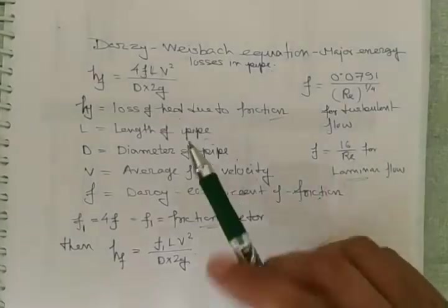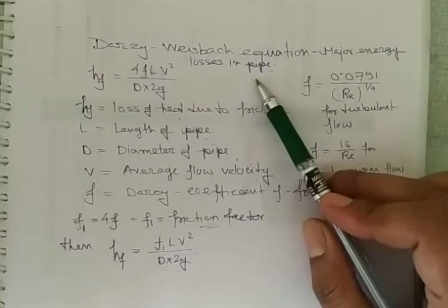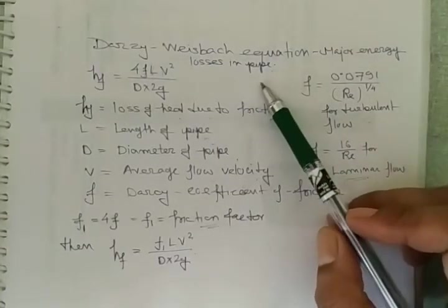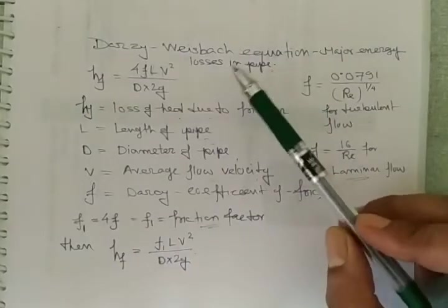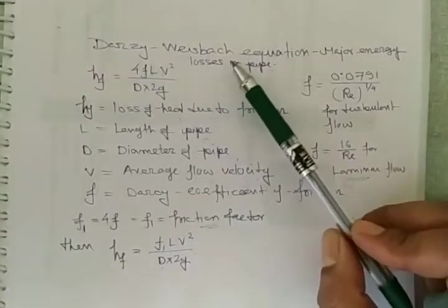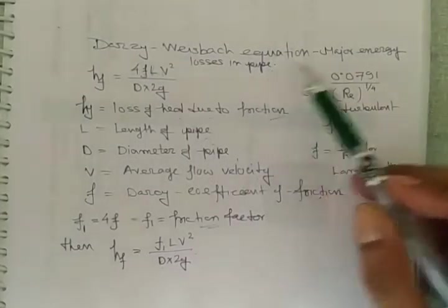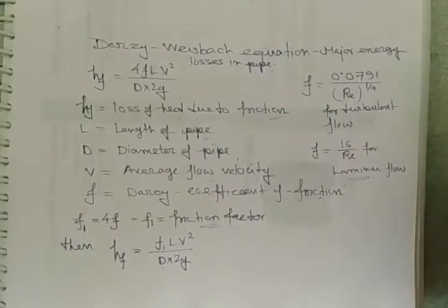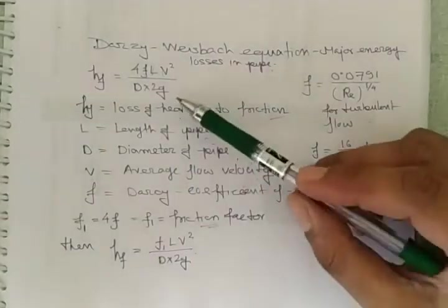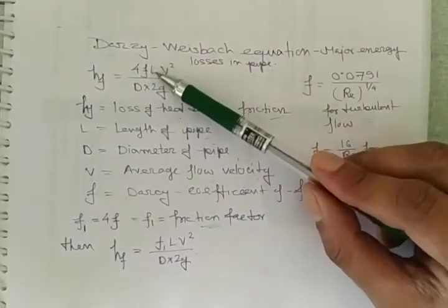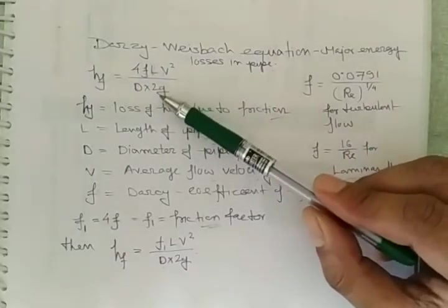As you know, in the turbulent flow, major losses occur due to friction. And this friction loss can be derived by Darcy-Weisbach. This is called Darcy-Weisbach equation. That comes under major losses in pipes. So here, hf is equal to 4fLV squared divided by D into 2g.